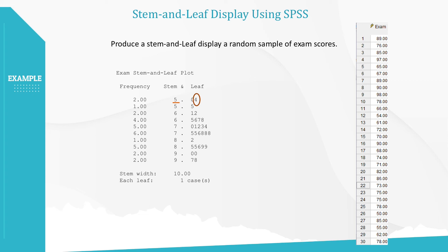How about the highest exam score in this dataset? Yes, 98. Please note that if original data values have many decimal places, such as 89.25, then SPSS may round those values to one decimal place or whole numbers, depending on the situation, to simplify the display.